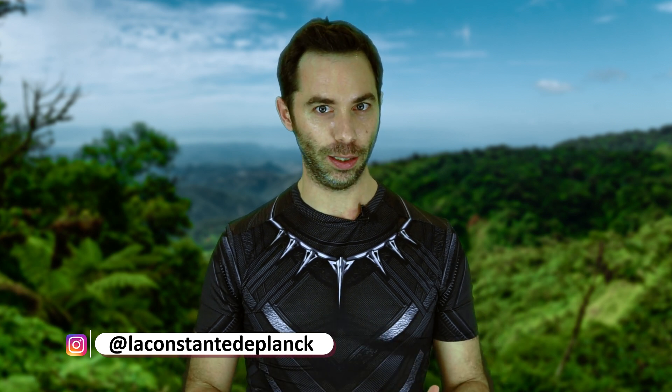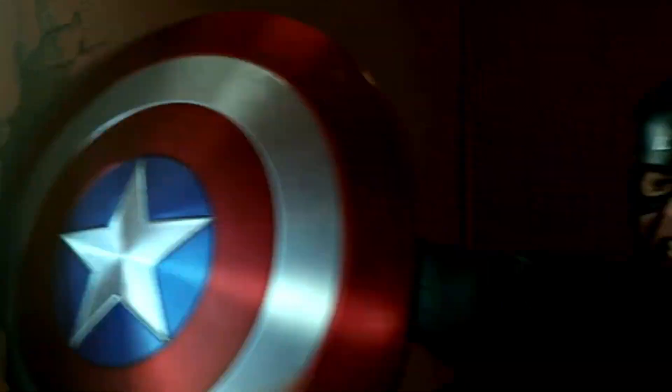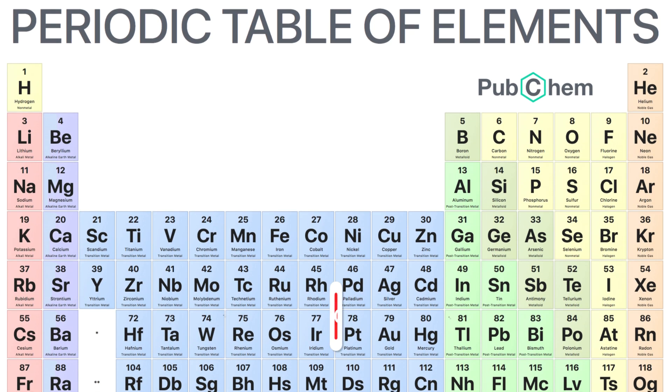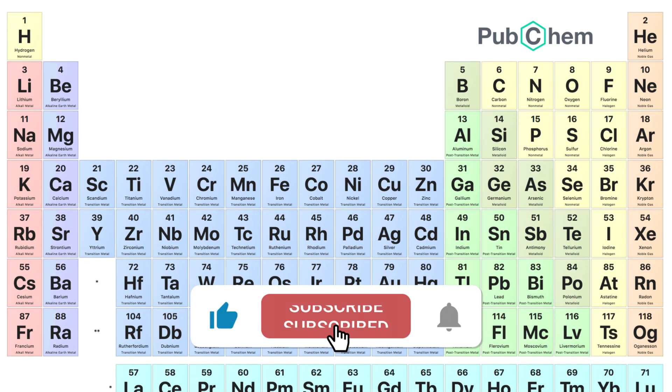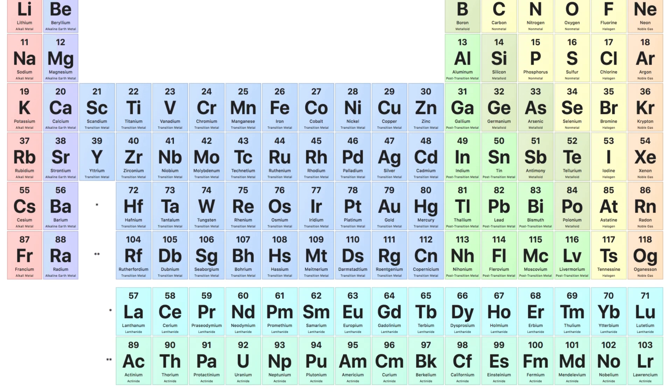En las películas de Marvel a menudo escuchamos hablar del vibranium, que según la literatura marvelita es un metal muy ligero capaz de absorber los impactos de forma excepcional. Es el material con el que está hecho el escudo del Capitán América o el traje de Black Panther, por ejemplo. Si nos vamos a la tabla periódica de los elementos, que es una tabla donde están representados todos los elementos químicos descubiertos hasta la fecha, vemos que no existe el vibranium.